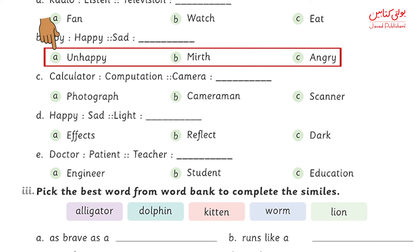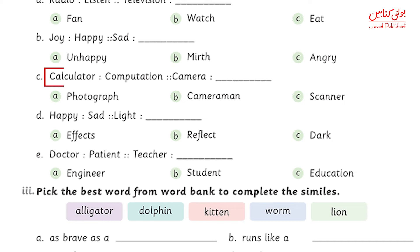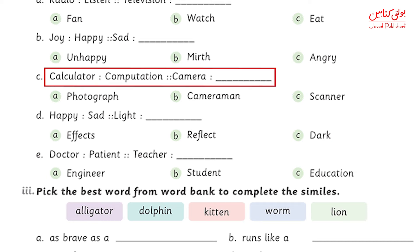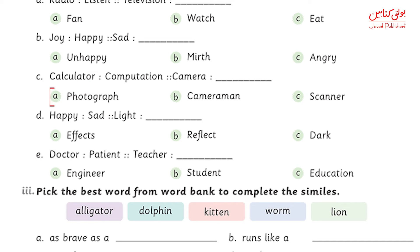C is: calculator is to computation, so camera is to photograph. On a calculator you do calculations — computation — and with a camera you take pictures, so the answer would be photograph.